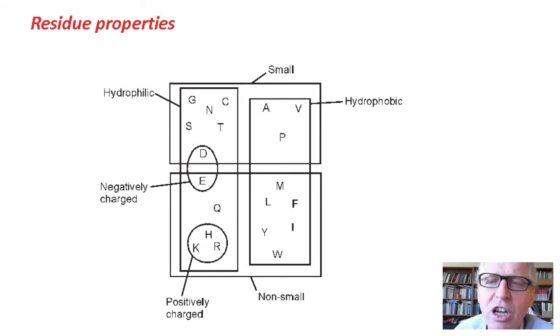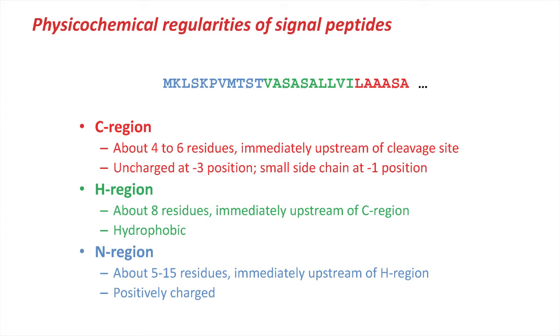And in fact, biologists know of the physical chemical properties around signal peptides. And they talk about this thing called the C region, the H region, and the N region. Now, the C region is just those three, four, five, six residues immediately upstream to the cleavage site. They're usually uncharged at position minus three, and the minus one position are small. They have a small side chain. Adjacent to that upstream is the H region, about eight residues long. That was all the Ls and Vs we saw. And it tends to be a hydrophobic region. And then above that, to the beginning of the protein is the N region, tends to be positively charged. So this is information we can use to construct more informed features.